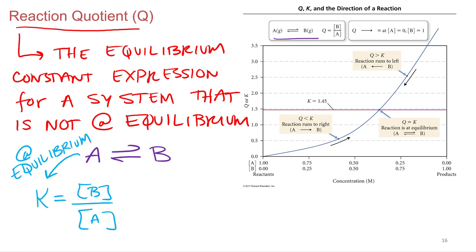The system, A and B are in equilibrium with each other. If I write it like this, Q equals B over A, it's what? That means it's not at equilibrium.